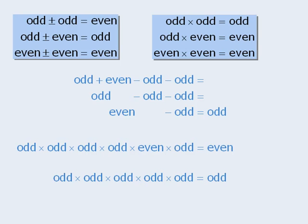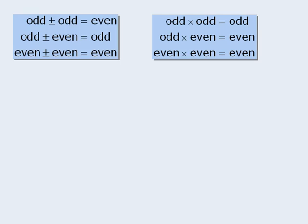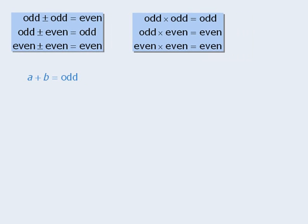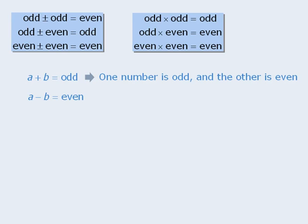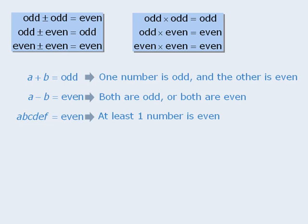Some questions will require you to draw conclusions based on certain information. If a and b are both integers and their sum is odd, then one must be odd and the other must be even. If a minus b yields an even number, then either both numbers are odd or both are even. If the product of six integers is even, then at least one of those six numbers must be even. If the product of six numbers is odd, then all six numbers must be odd.